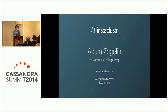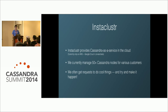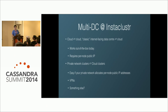My name is Adam Zeglin. I'm the co-founder and VP of Engineering at Instacluster. Instacluster is a company that provides Cassandra as a service in the cloud — currently on Amazon Web Services, with Google Compute in private beta. We currently manage about 50 Cassandra nodes and get a lot of feature requests from customers, and one of those is multi-DC support.